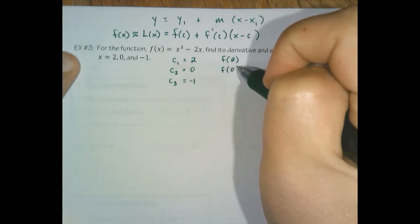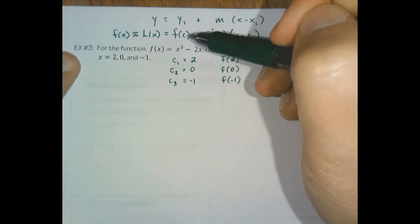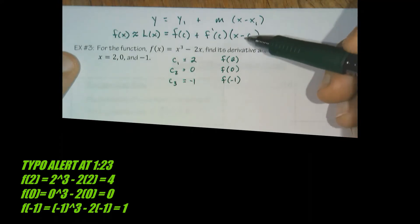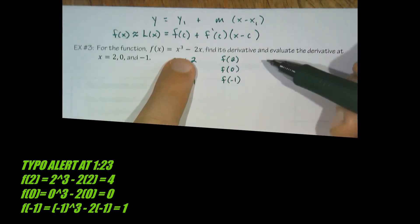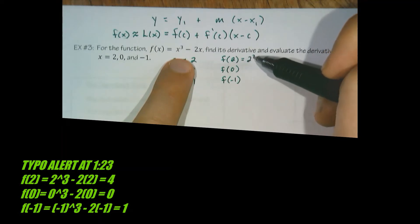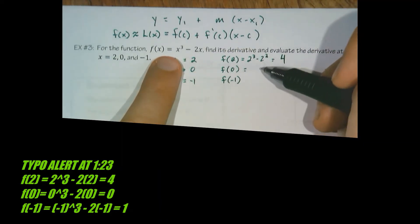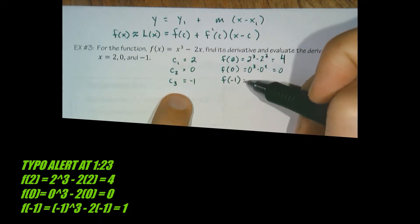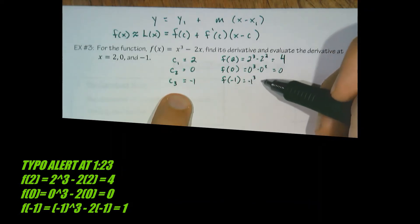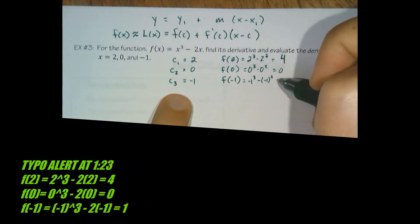Which means if we are going to evaluate the function at those three points, we're going to get the three coordinate pairs. So f of two is two to the third minus two squared, which is eight minus four. F of zero is zero cubed minus zero squared, which is zero. And f of negative one is negative one cubed minus negative one squared, which is negative two.